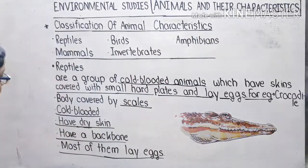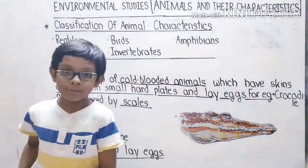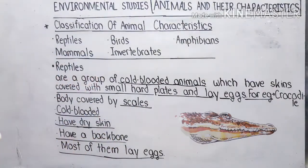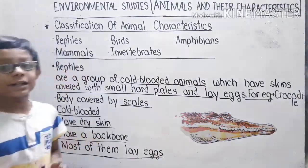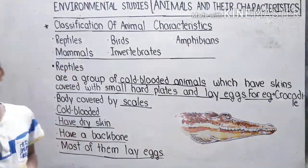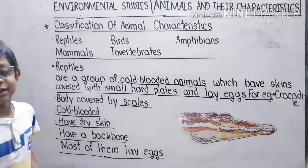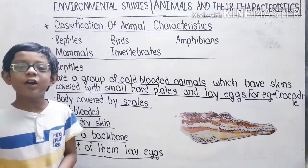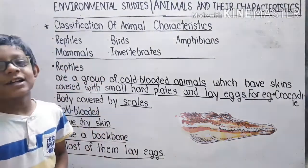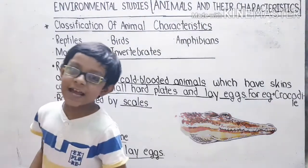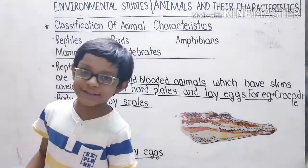The animals who cannot maintain the temperature of their body are called cold-blooded animals. If you want to study more about animals and their characteristics, please subscribe to my channel. Thank you for watching.